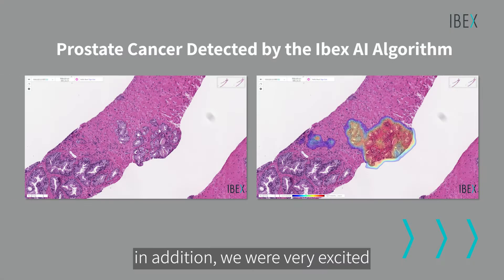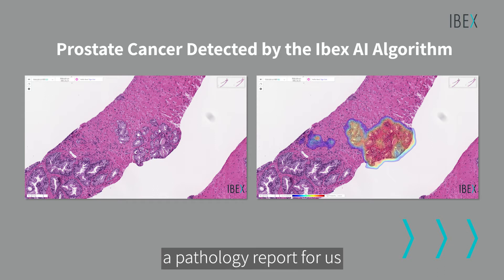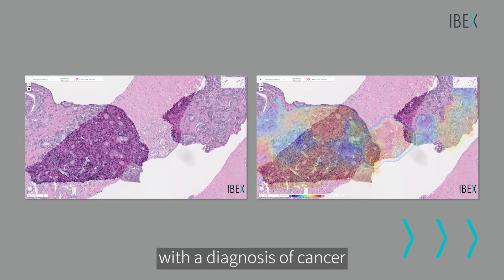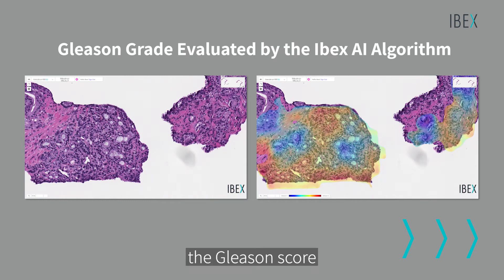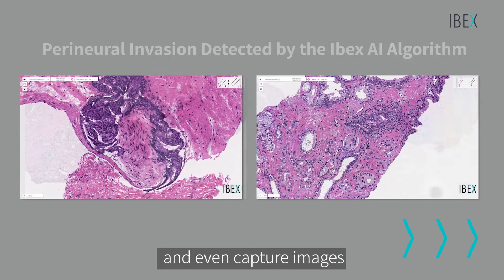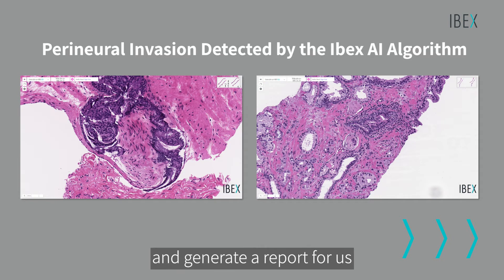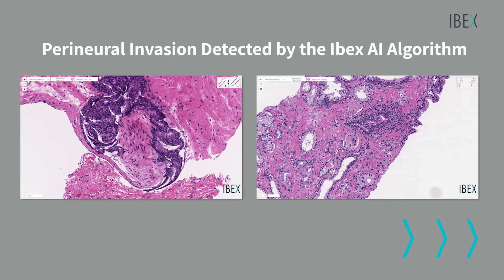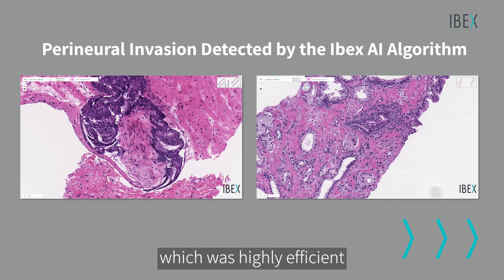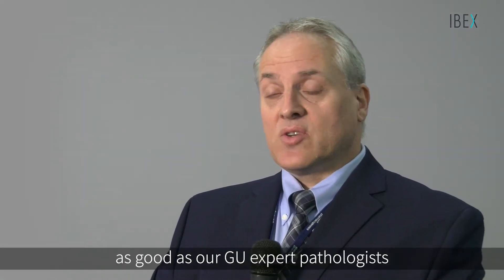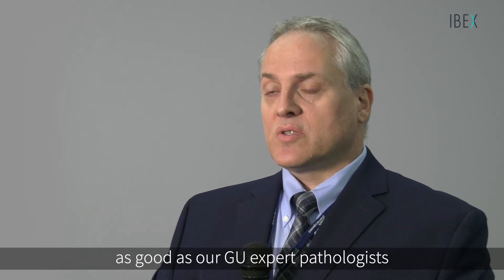In addition, we were very excited by the fact that the algorithm could generate a pathology report for us with a diagnosis of cancer, the Gleason score, perineural invasion, and even capture images and generate a report, which was highly efficient and very accurate, with sensitivities and specificities as good as our GU expert pathologists.